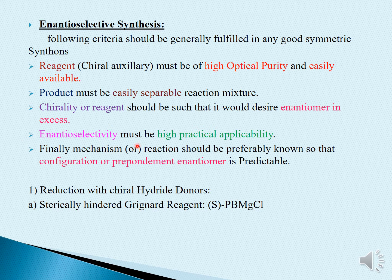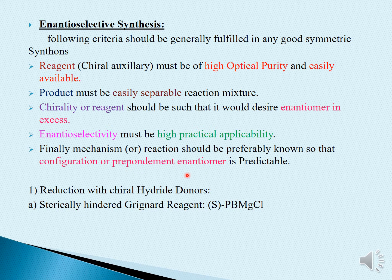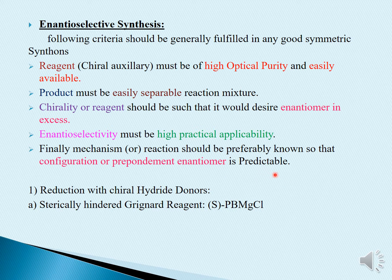Enantioselectivity must be of high practical applicability — whether it is 92%, 82%, or 84% — because depending on that, your major product will be determined under the favored condition. Also, you have to know the configuration of the preponderant enantiomer: whether it is S or R configuration, and which face is involved — whether it is the re-face, which is always clockwise, or the si-face, which is anti-clockwise.